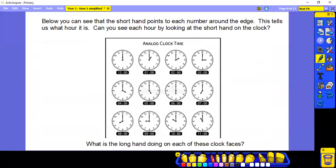So, we've got some clocks here. And we're just going to look at the short hand for the moment. Can you see each hour by looking at the short hand? 12 o'clock. It's difficult to tell with this one because they're both pointing to the same number. 1 o'clock.